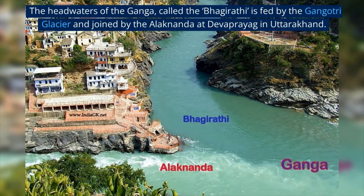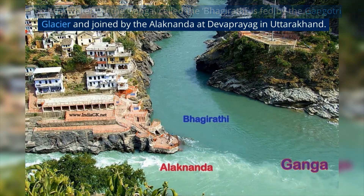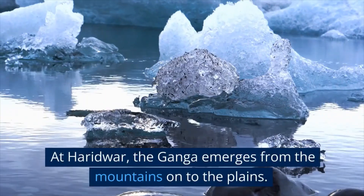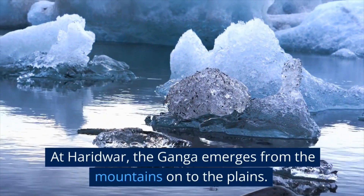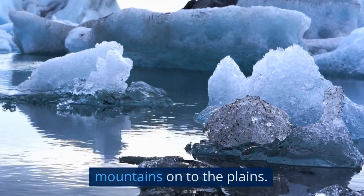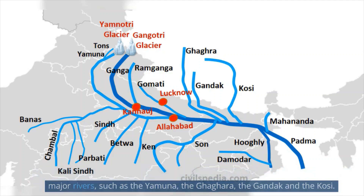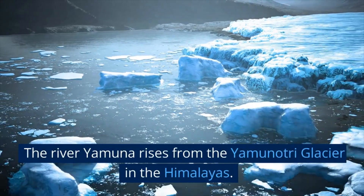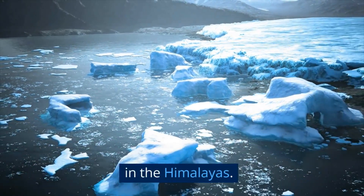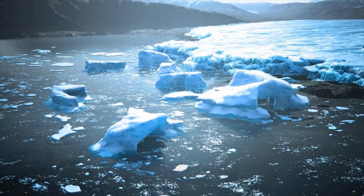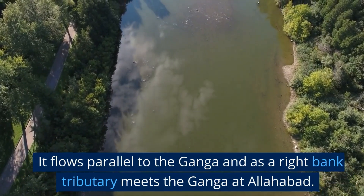The headwaters of the Ganga, called the Bhagirathi, are fed by the Gangotri Glacier and joined by the Alaknanda at Devprayag in Uttarakhand. At Haridwar, the Ganga emerges from the mountains onto the plains. The Ganga is joined by many Himalayan tributaries, including major rivers such as the Yamuna, the Ghaghra, the Gandak, and the Kosi. The Yamuna rises from the Yamunotri Glacier and flows parallel to the Ganga as a right-bank tributary, meeting the Ganga at Allahabad.